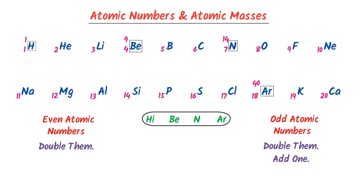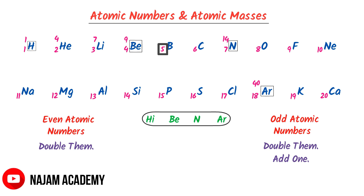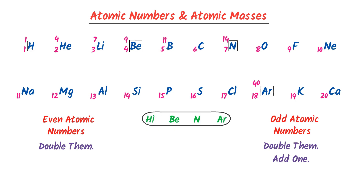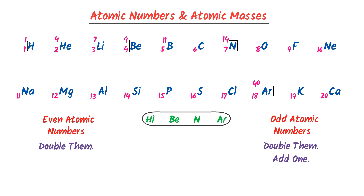For example, the atomic number of Helium is 2; double it and we get 4. The atomic number of Lithium is 3, which is odd; double it to get 6, plus 1 equals 7. The atomic number of Boron is 5, which is odd; double it to get 10, plus 1 equals 11. The atomic number of Carbon is 6, which is even; double it and we get 12.